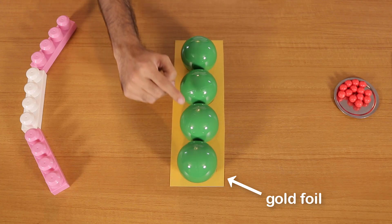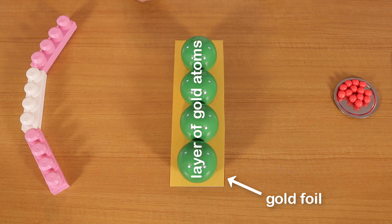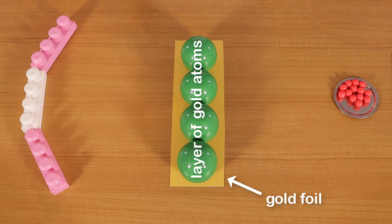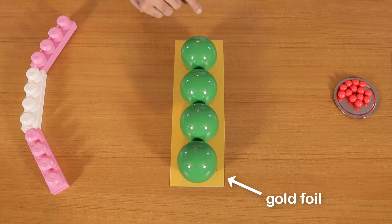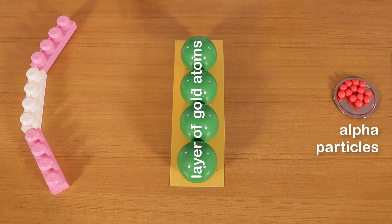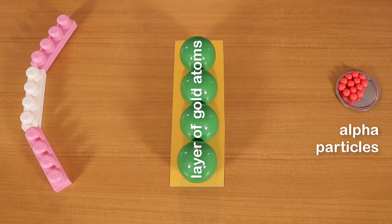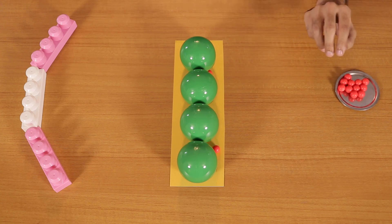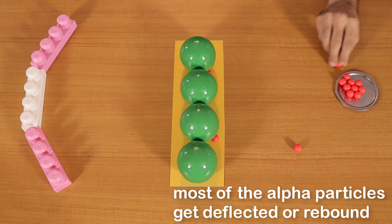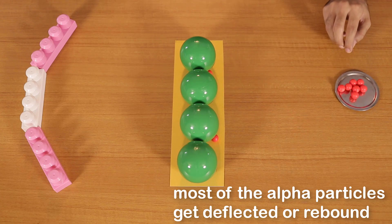Let's use these balls to represent a layer of gold atoms. My gold atoms are green in color. The actual thickness of the gold foil is about 1000 atoms, but for simplicity let's keep the thickness just as a single layer of atoms. And we'll bombard this layer of gold atoms with our alpha particles right here. Let's fire the alpha particles towards our gold atoms.